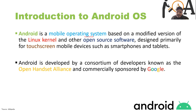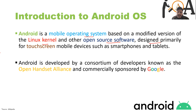Android is a mobile operating system based on a modified version of the Linux kernel and other open source software. Open source software is software whose source code is freely available to use. You can contribute to it, modify the code, change definitions, and basically improve it. It is designed primarily for touchscreen mobile devices such as smartphones and tablets.